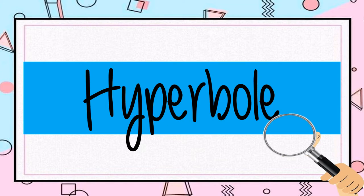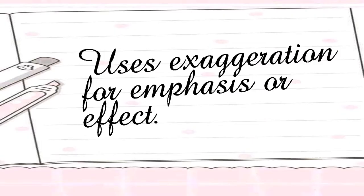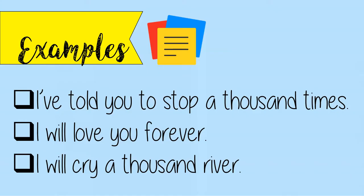Hyperbole, or in some books referred to as hyperbole, is a figure of speech that uses exaggeration for emphasis or effect. Examples: I've told you to stop a thousand times. I will love you forever. I will cry a thousand rivers.